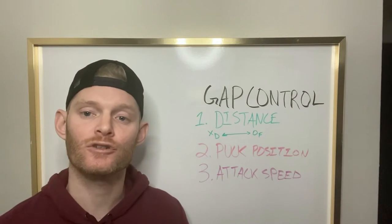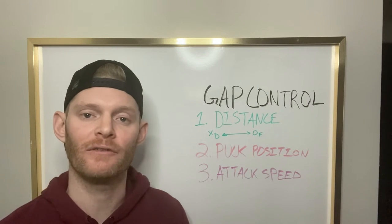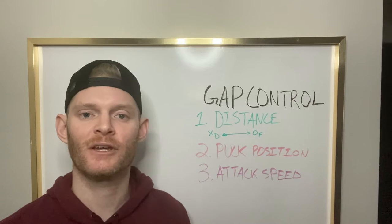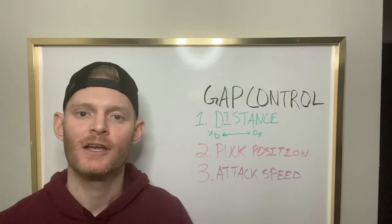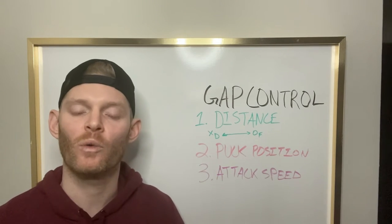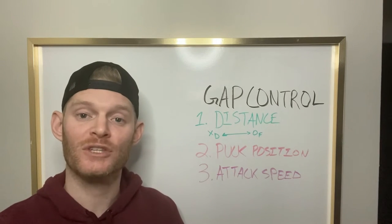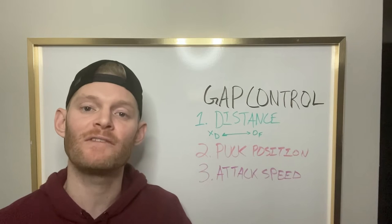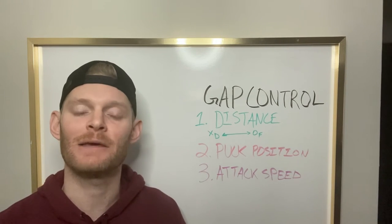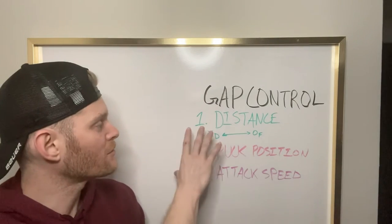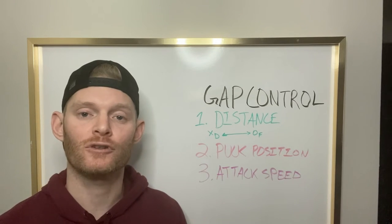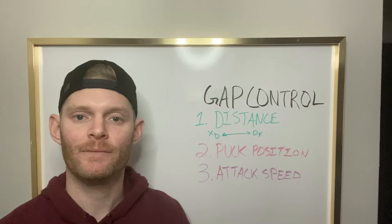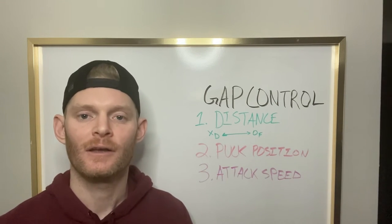The final attribute of gap control is the attack speed of the opponent. Going back to the example of a team having a flawless breakout — if they're breaking out with speed and tic-tac-toe passing, we might want to set a bigger gap of about two stick lengths because we can't skate backwards as fast as they skate forward. That way you give yourself a chance to build some backwards skating speed. As the opponent approaches, taper your speed to match theirs so you can force them wide towards the boards and limit high percentage scoring opportunities. These are the three criteria for gap control; let's jump into live video to see good examples of setting gaps, good puck positioning, and matching attack speed correctly.